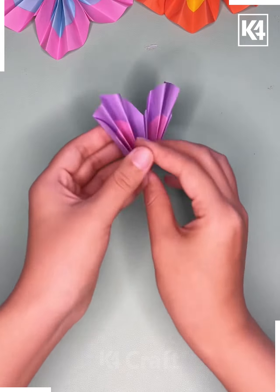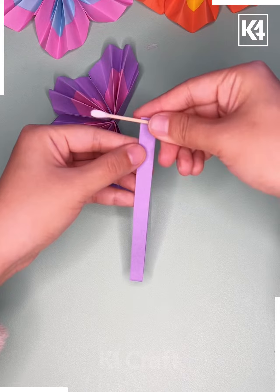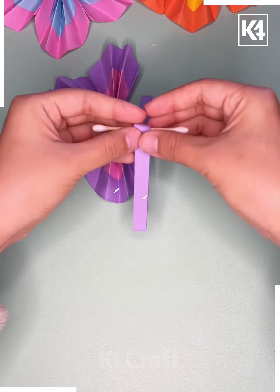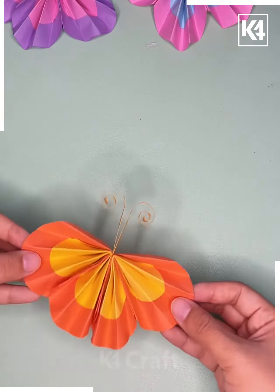You have to get another as well, paste them together. Now with the help of earbuds you need to roll the sheets in this manner and get the antennas made, and your butterflies are ready now.